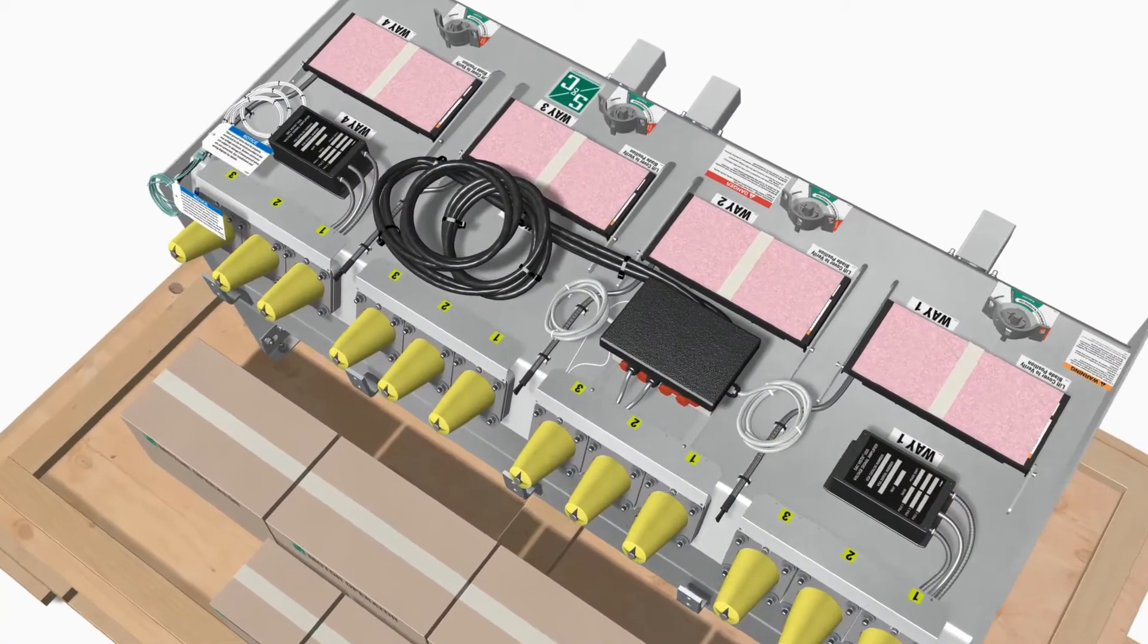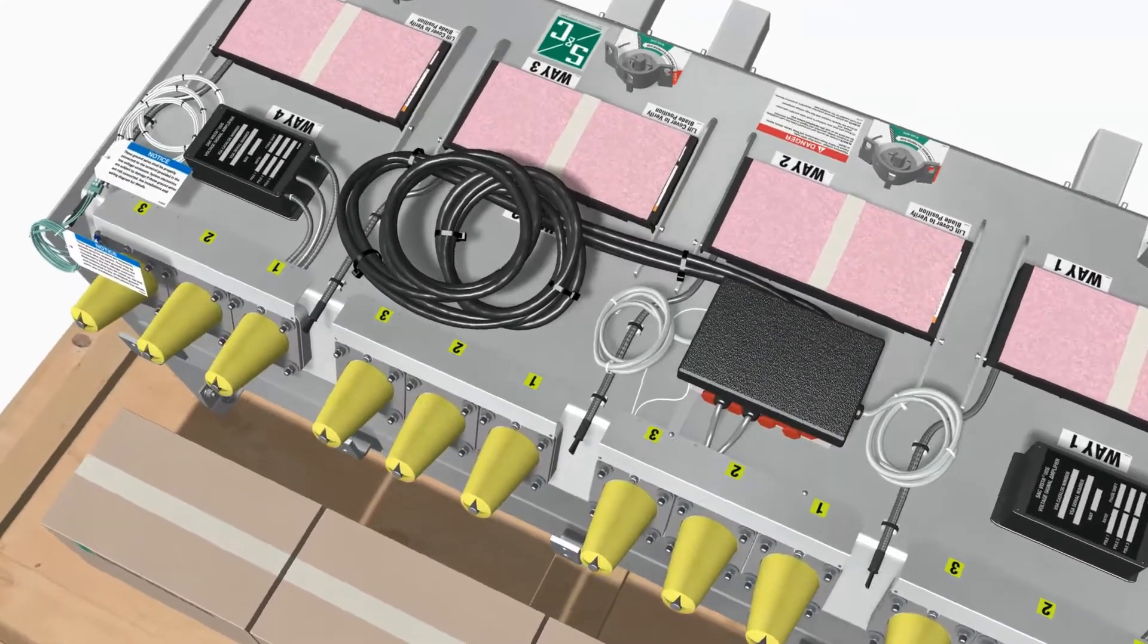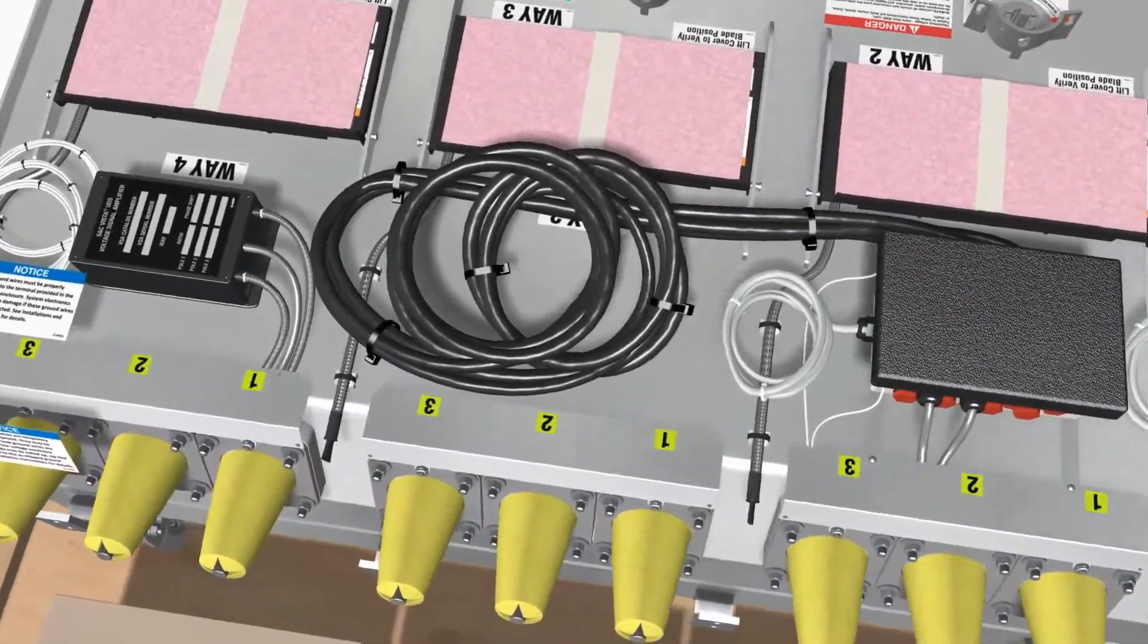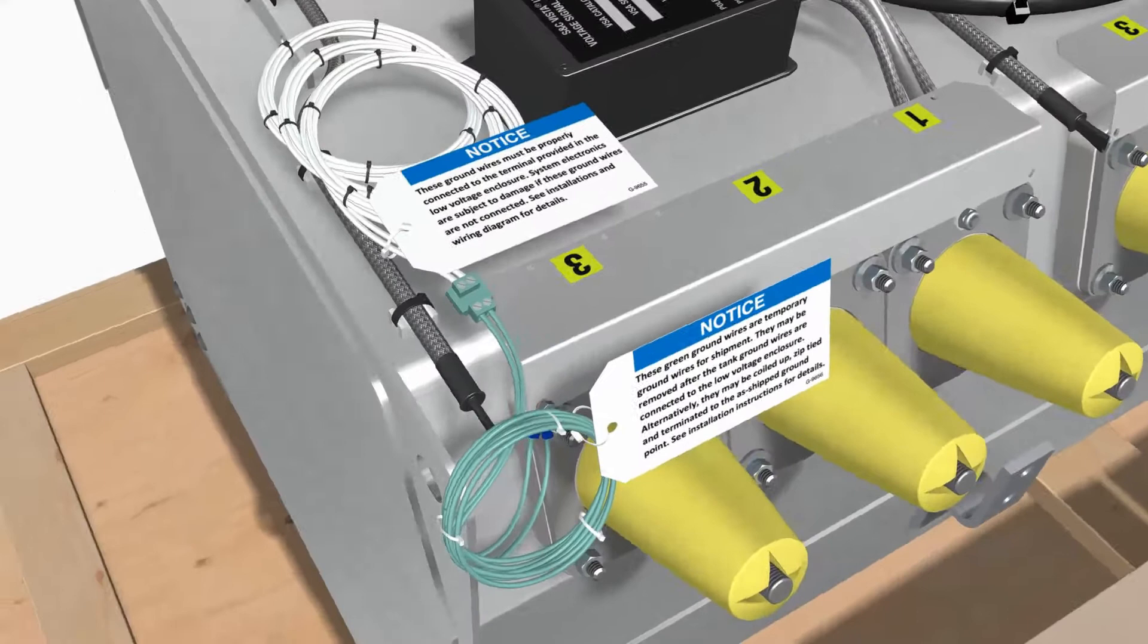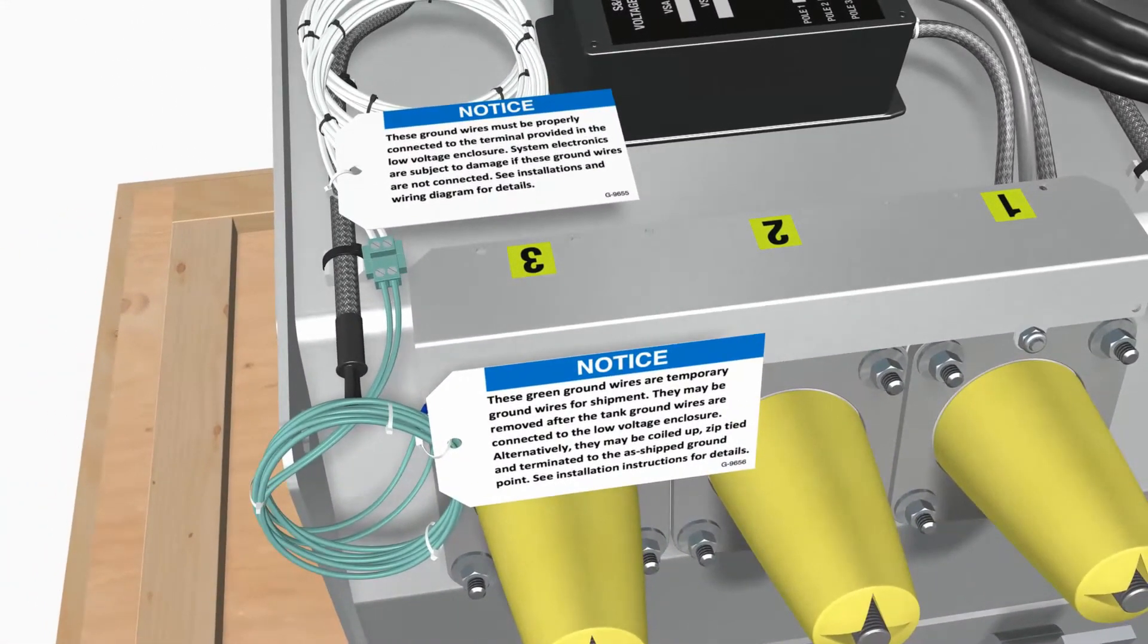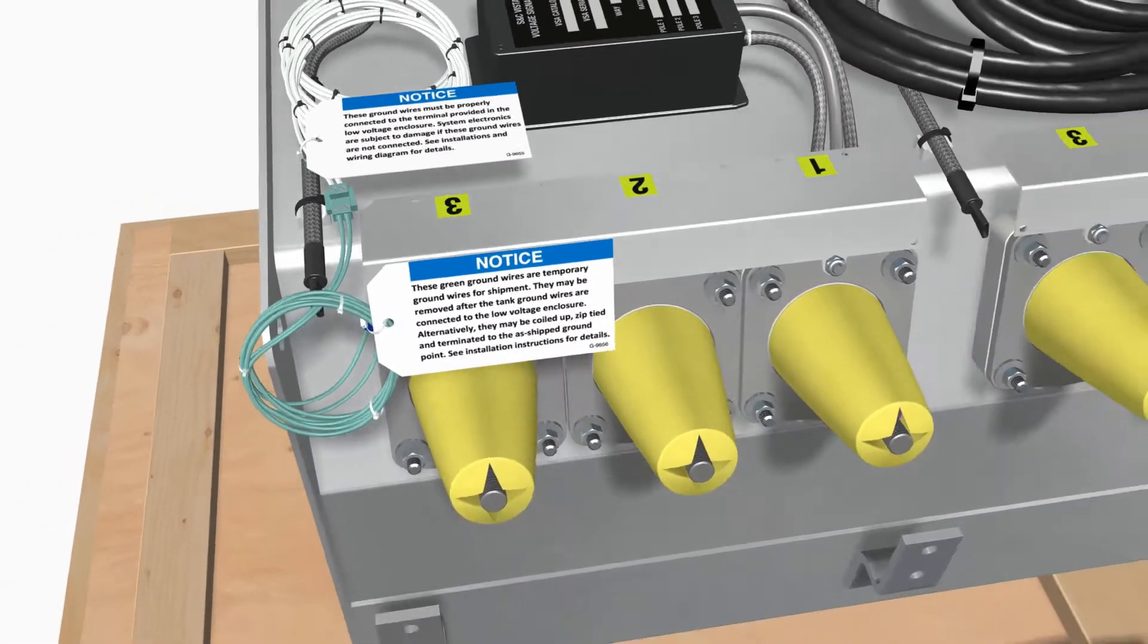All external wiring is coiled at the end of the tank for user installation. Two ground wires per voltage sensor way are attached to shipping temporary grounding leads.